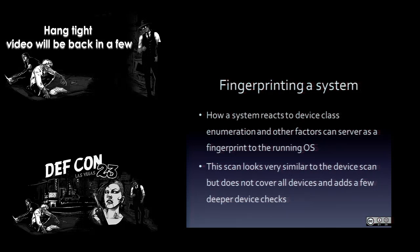UMAP also has built-in fingerprinting of a system — just like nmap where you send packets and can tell the operating system by how they respond, you can do the same thing with USB. What drivers were built in? What messages did it handle? This is like nmap for operating systems. For a small embedded router with a USB port, you can look at what the operating system is, down to about the version level. It's similar to the way nmap scans but handy for identifying embedded devices.